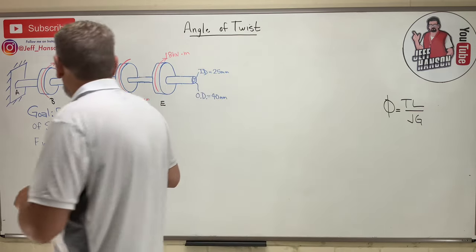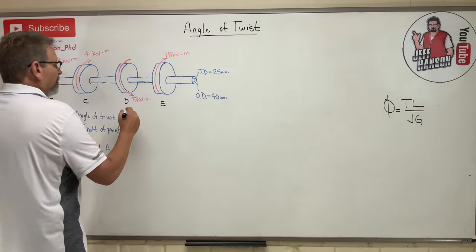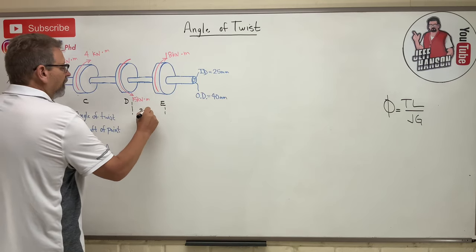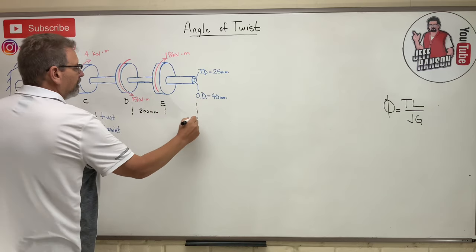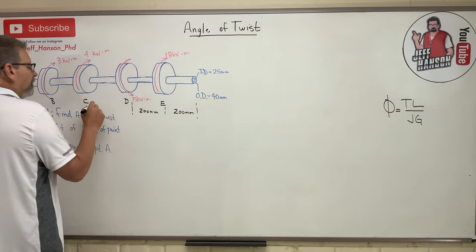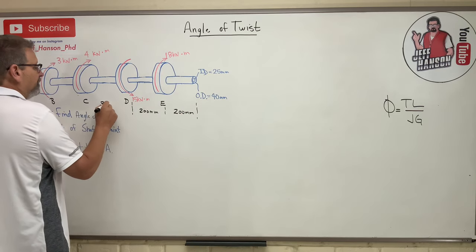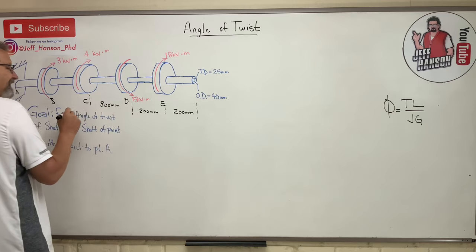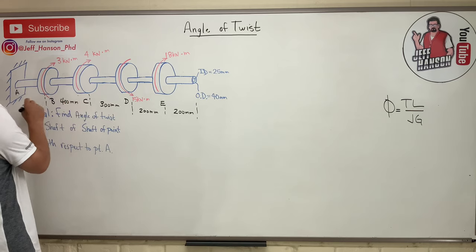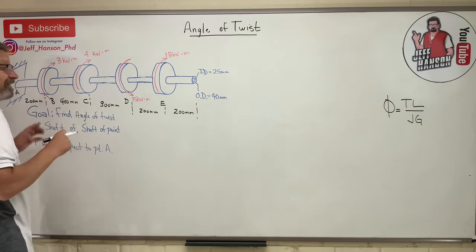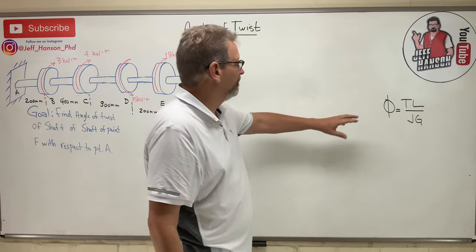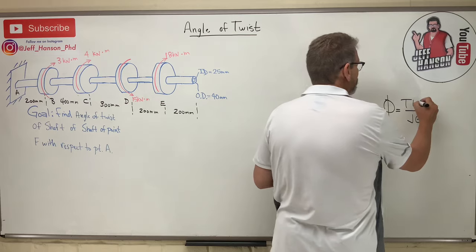Let's look at this shaft and make up some numbers. Let's say this section is 200 millimeters, this one is 300 millimeters, this one is 400 millimeters, and then back to 200 over here. The length of each shaft section really matters for the angle of twist, so L is the length of the piece in question.